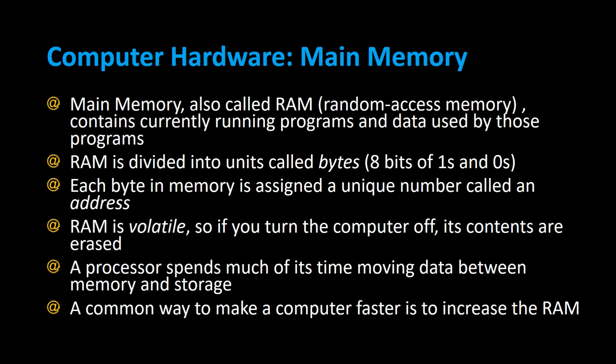Main memory, also called RAM or Random Access Memory, contains currently running programs and data used by those programs. RAM is divided into units called bytes. A byte is eight bits of ones and zeros. Each byte in memory is assigned a unique number called an address.